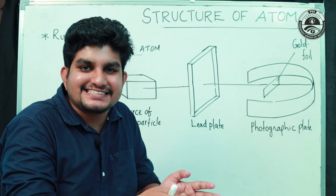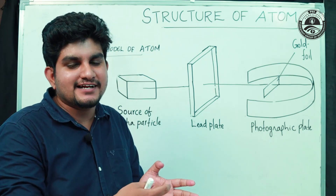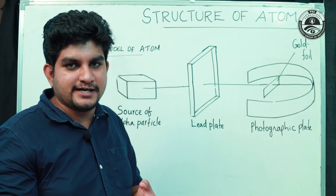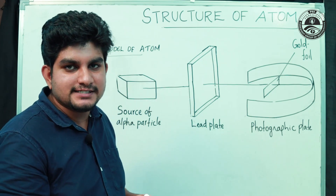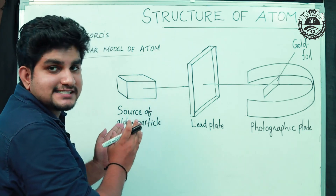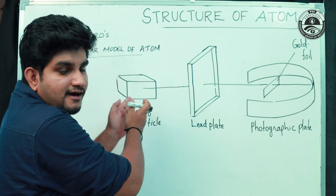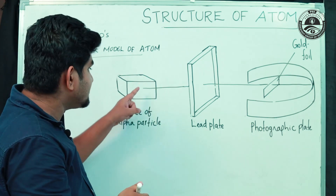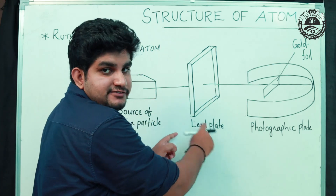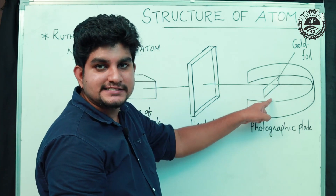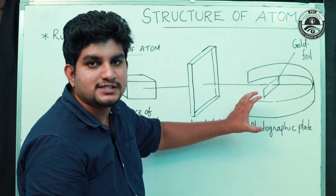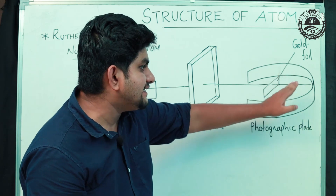This is called the Alpha Particle Scattering Experiment. We create a source of alpha particles. There is a lead plate, a gold foil, and a zinc sulfide coated fluorescent screen.